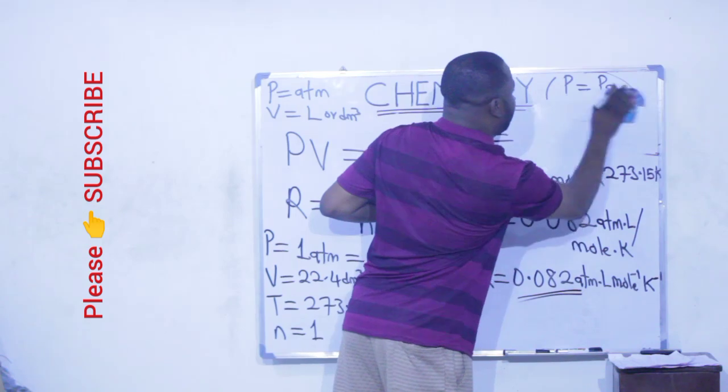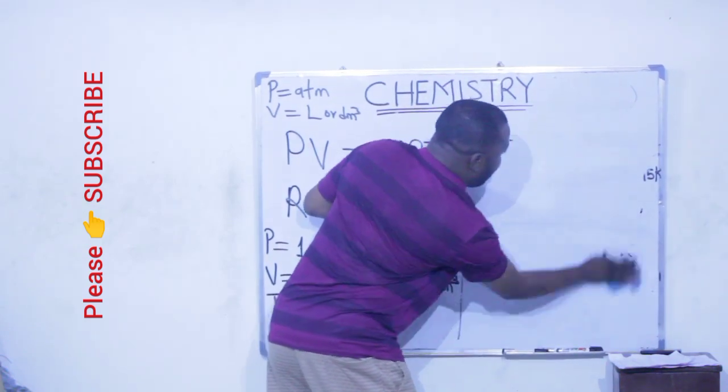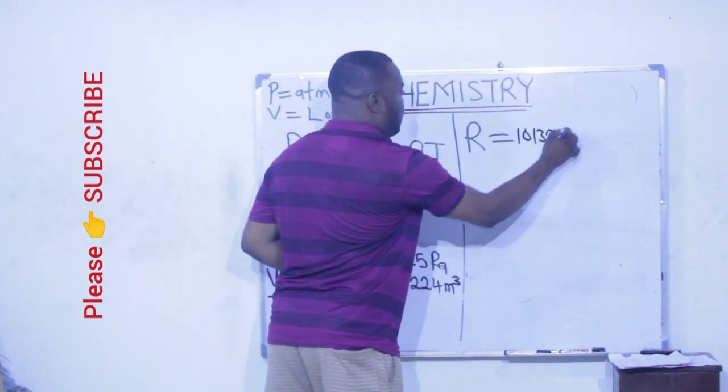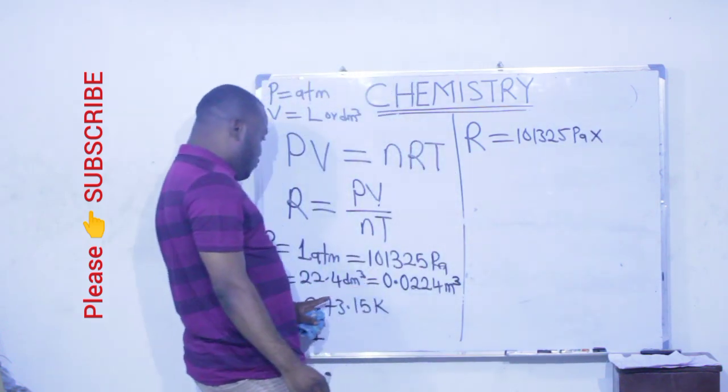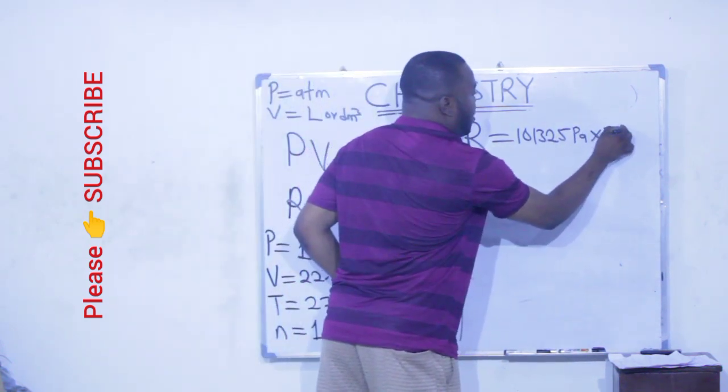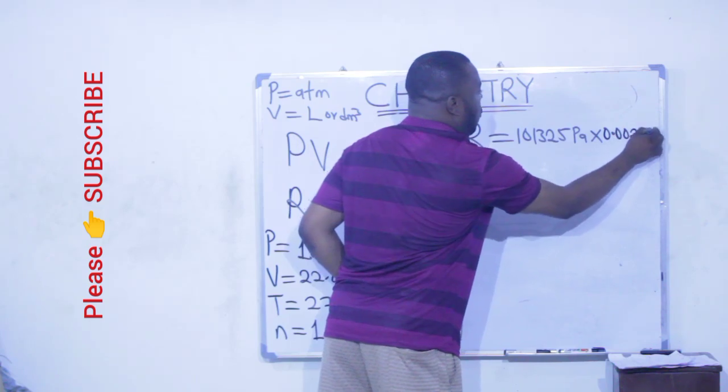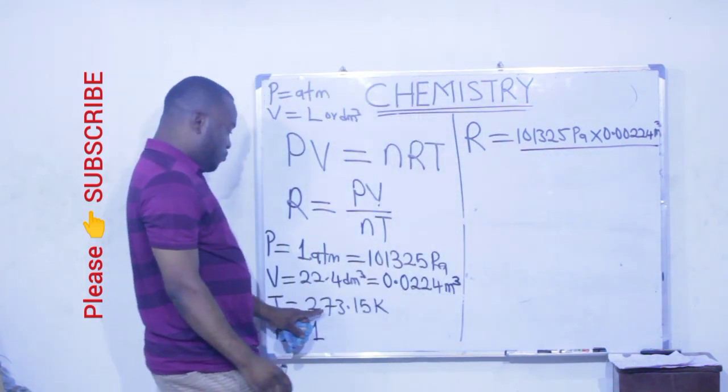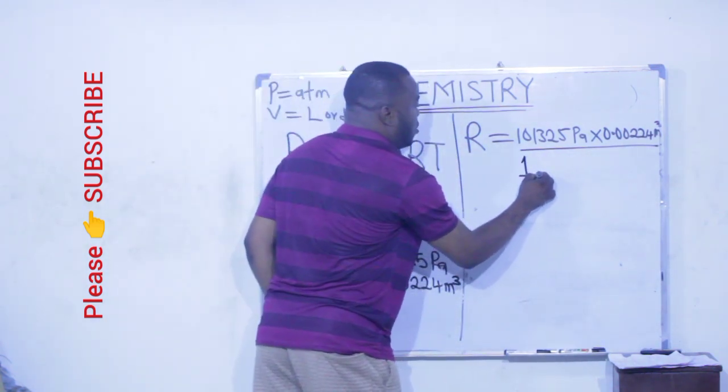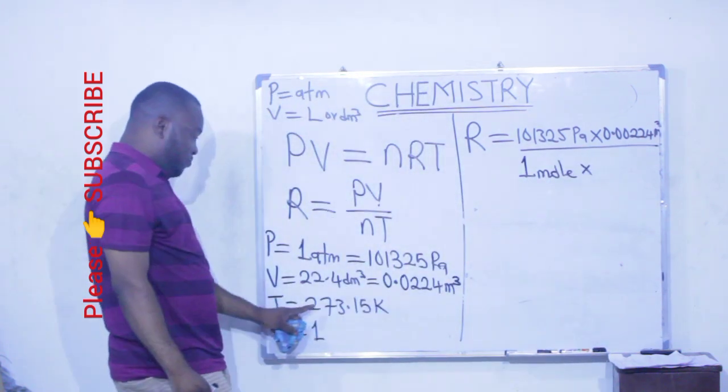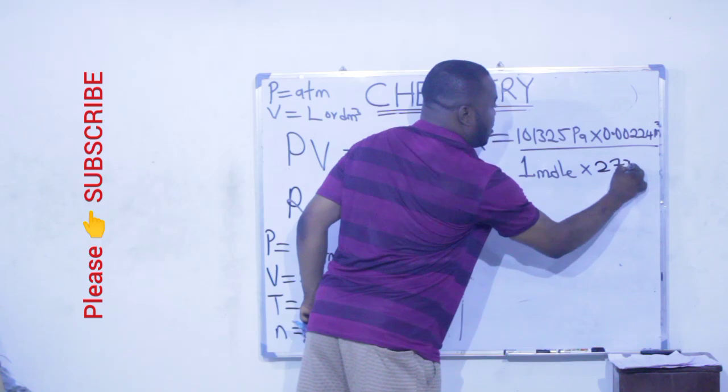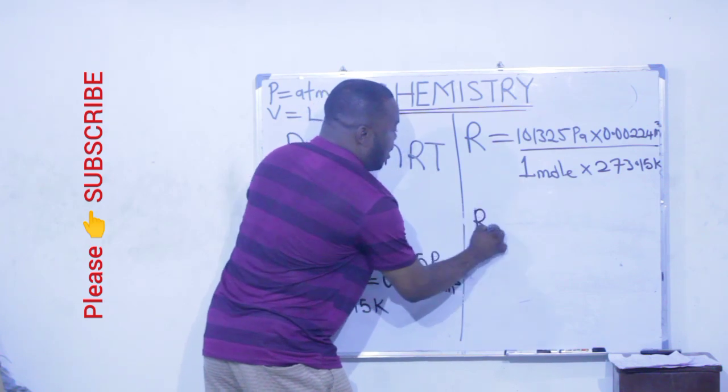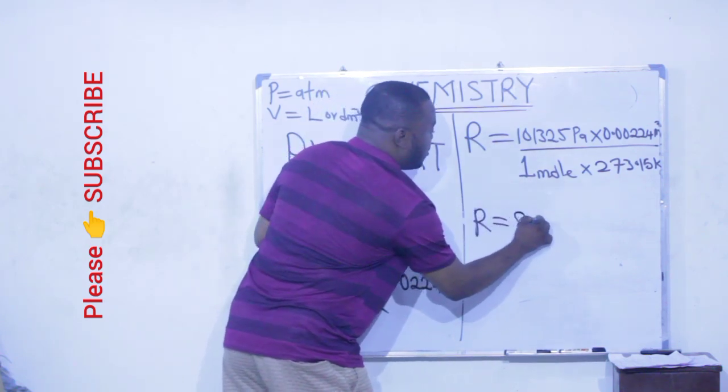Now, if we substitute our values for this, we are going to have our values as pressure 101325 Pascal multiplied by volume 0.0224 meter cube, divided by mole which is 1 mole, multiplied by temperature which is 273.15 Kelvin. If you do all the calculation, you are going to get your R to be 8.314.